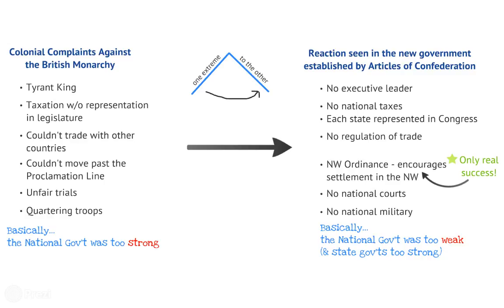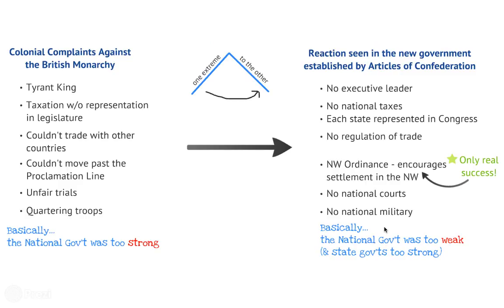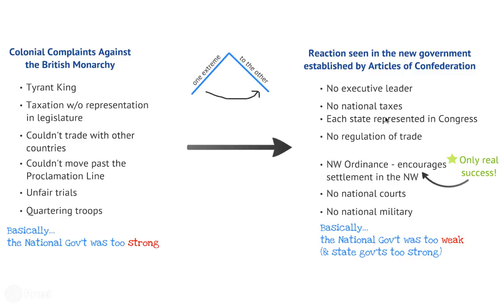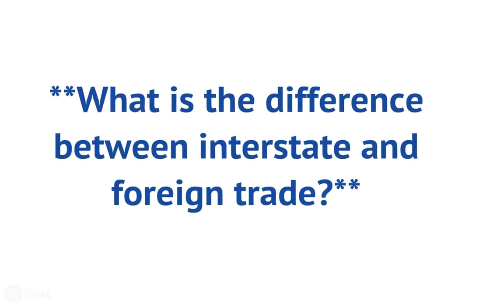Basically, this made the national government way too weak and the state governments very strong. States would decide things like taxes on their own. For example, North Carolina said they were not going to have any taxes, while Massachusetts said they were going to have taxes — it was up to each individual state, which was going to lead to issues.